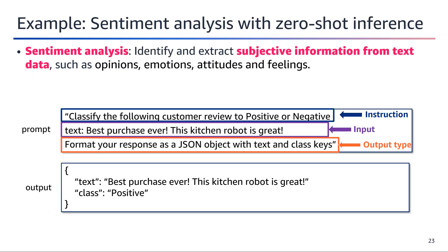Sentiment analysis is a technique used to identify and extract subjective information from text data, such as opinions, emotions, attitudes, and feelings. It involves analyzing the sentiment expressed in text — whether positive, negative, or neutral. Sentiment analysis has numerous applications, including monitoring customer feedback, analyzing social media sentiment, and understanding public opinion. It can be performed using machine learning models trained on labeled data or through unsupervised techniques that leverage lexicons and rules, making it a valuable tool for businesses and researchers to gain insights from textual data.